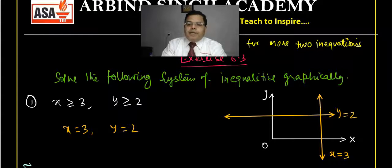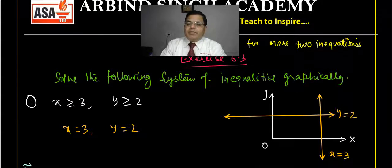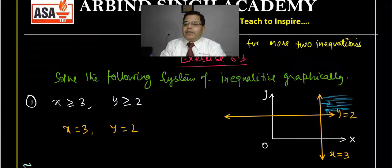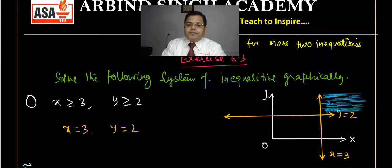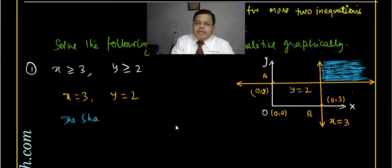Now, y is greater than 2. If you put 0, it will not satisfy — that means the region is away from the origin, so it is in the upward direction. And x is greater than 3 is in the rightward direction. So the region satisfying both inequalities is the shaded region to the upper-right. That shaded region is the feasible solution because it satisfies both x > 3 and y > 2.